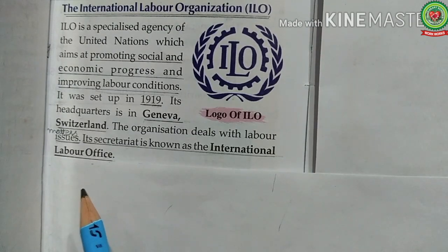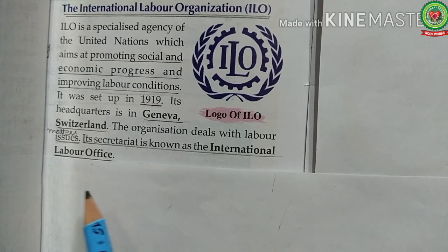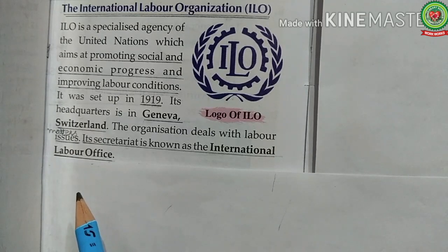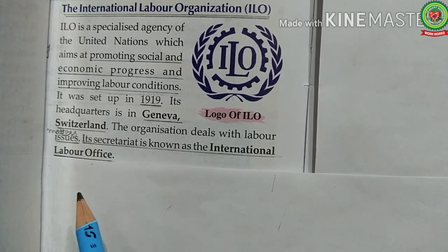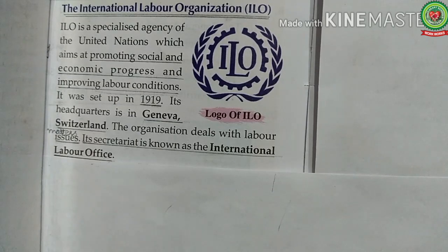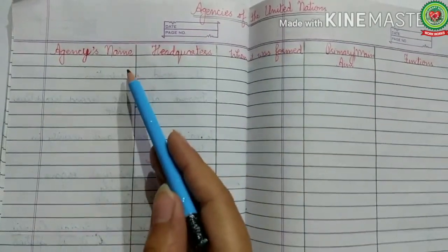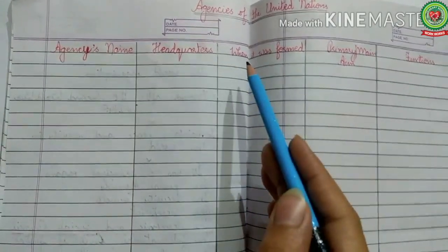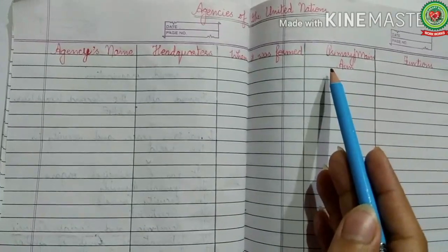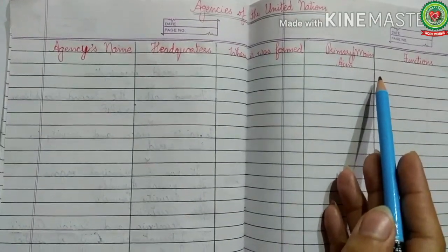We can conclude that ILO is the first and oldest specialized agency, with around 40 field offices around the world. The ILO labor standards are broadly aimed at ensuring productive and sustainable work worldwide in conditions of equity, freedom, security, and dignity. Your homework today is to make a chart on the agencies of the United Nations, in which you have to mention the agency's name, headquarters, when it was formed, primary or main aim, and its functions.